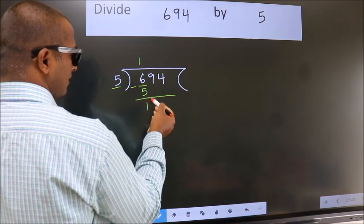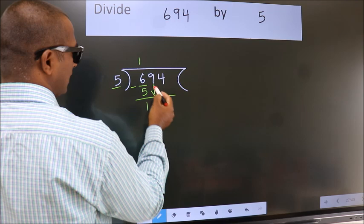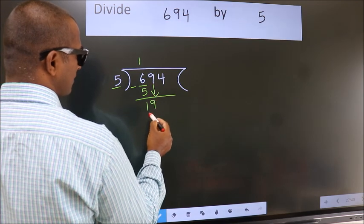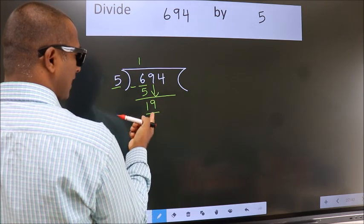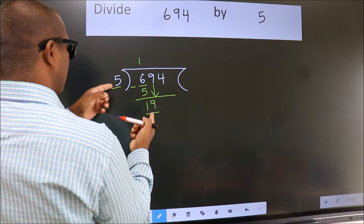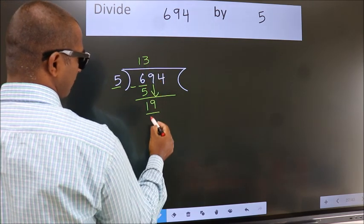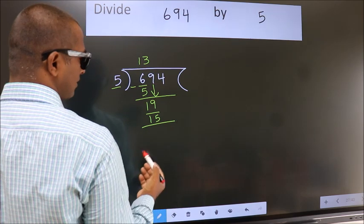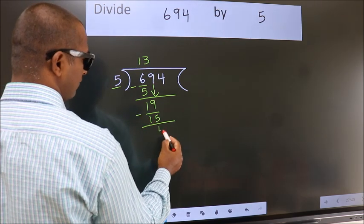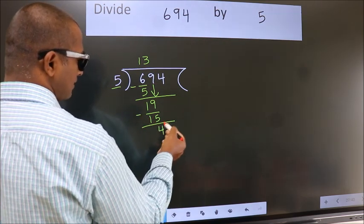After this, bring down the beside number. So 9 down, making 19. A number close to 19 in the 5 times table is 5 times 3 equals 15. Now we should subtract. We get 4.